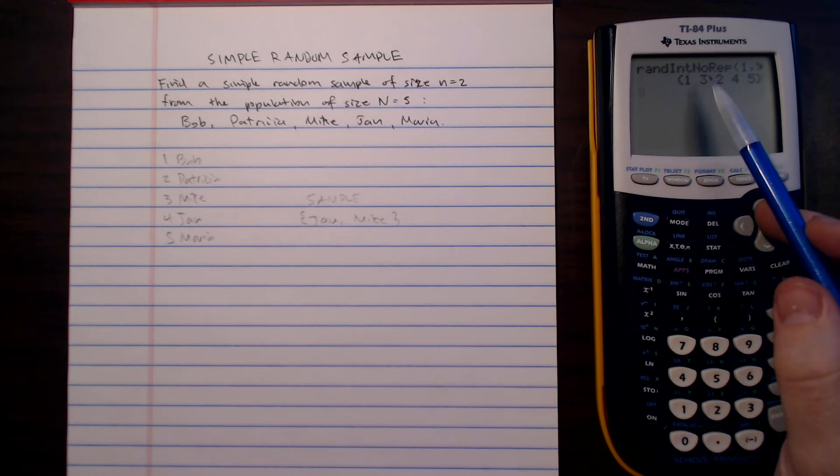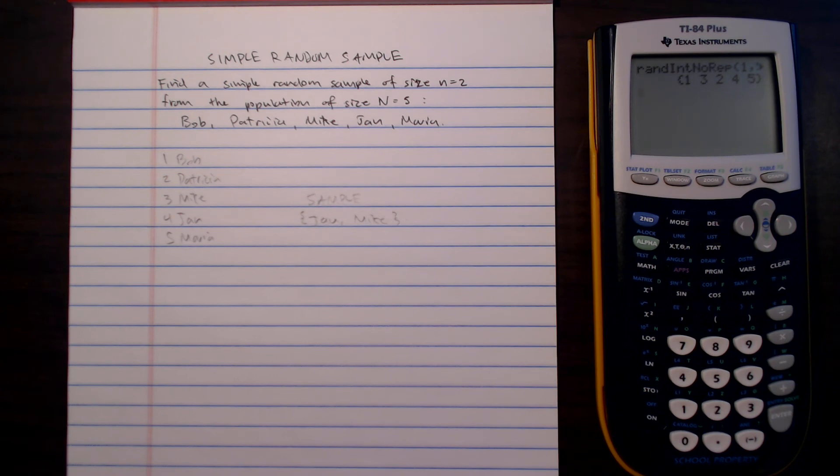So in this case, it would give us Bob and Mike as our sample. This is how we can find a simple random sample using a TI-84 Plus. If you guys have any questions, please let me know.